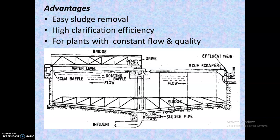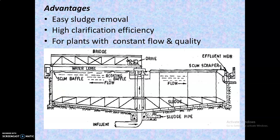Advantages of circular tanks include easy sludge removal and high clarification efficiency, and they are suitable for plants with constant flow. The raw water influent is taken inside and from the inlet portion the water follows a parabolic path. Due to this parabolic direction, settling is more effective and easier in the circular type of sedimentation tank.